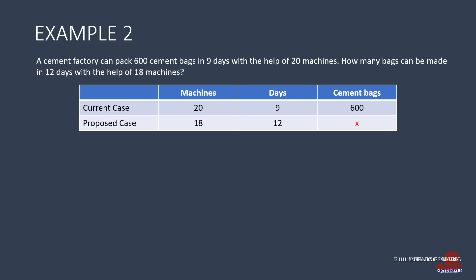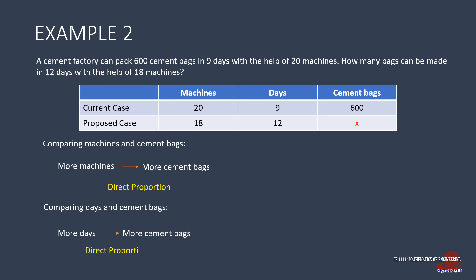Analyze the scenario. Comparing machines and cement bags, more machines functioning produce more cement bags. This is a direct proportion. Next is to compare the number of days with the produced cement bags. More days of work creates more number of cement bags. Another direct proportion.